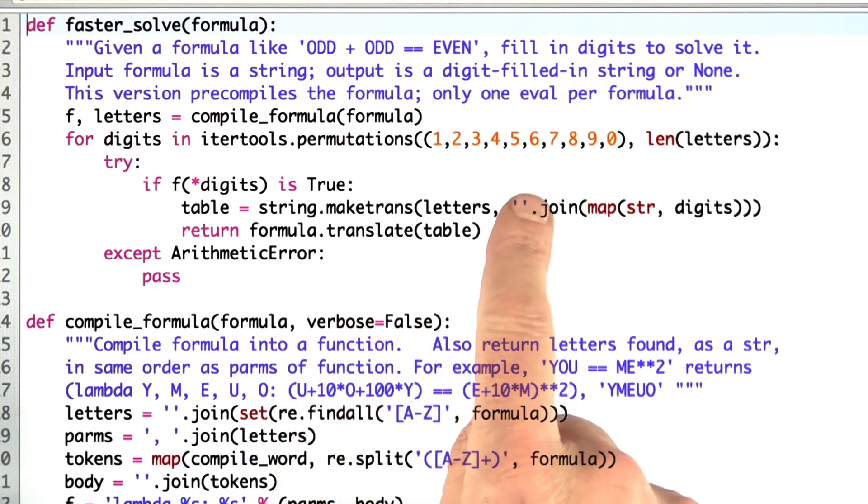I don't have to do it every time like I did in the previous version of Solve. Then if there's an arithmetic error, I catch that and go on to the next permutation.